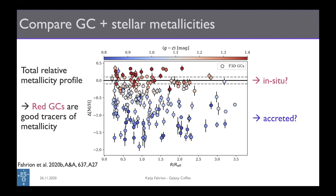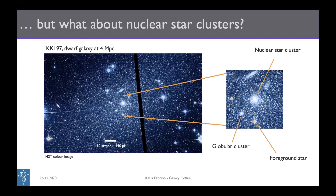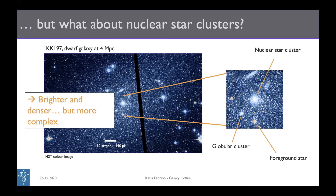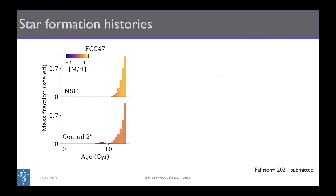I want to spend the last few minutes talking about a different type of star cluster: nuclear star clusters. As the name suggests, nuclear star clusters sit in the centers of galaxies. In general, nuclear star clusters are denser and brighter than globular clusters — making them even easier to observe in distant galaxies, but also more complex.